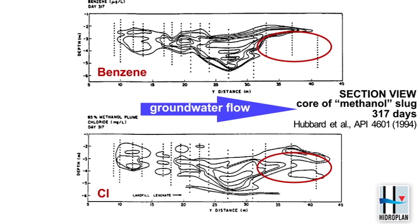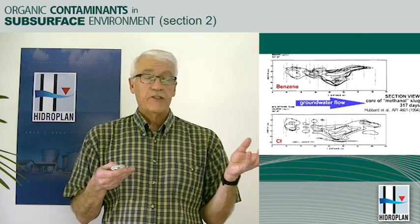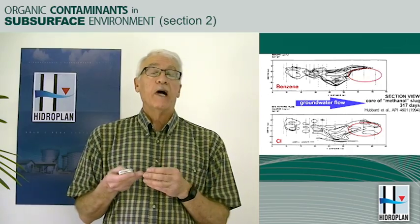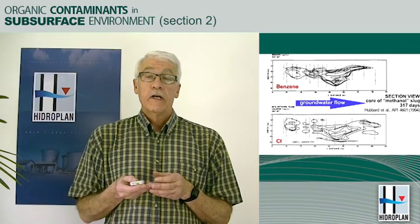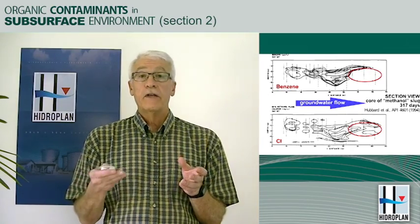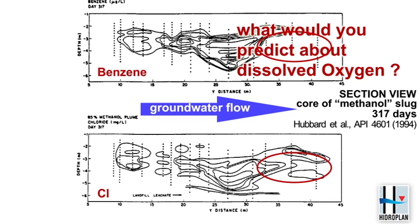A good question to ask is: what would you predict about dissolved oxygen in that water? If we looked at the biodegradation of benzene, it would consume oxygen. So if we see some evidence that benzene might have been biodegraded, we could try to confirm that by looking at dissolved oxygen. We would anticipate that if the benzene is being degraded, the oxygen should be lowered — you might check for dissolved oxygen in that area and anticipate it would be a little lower. That would allow you to speculate that benzene degradation might be occurring.